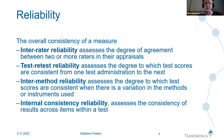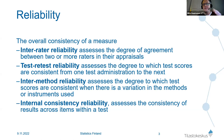That relates to internal consistency reliability. On the national R&D survey, the respondent has an opportunity to give their name, which allowed me to compare how responses change if the respondent changes between years. That gives an opportunity to estimate inter-rater reliability.